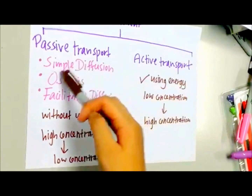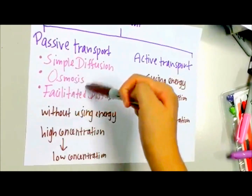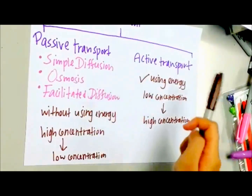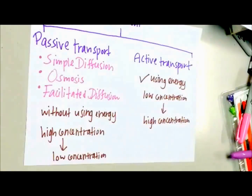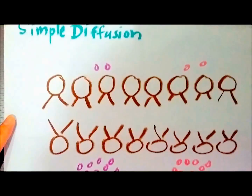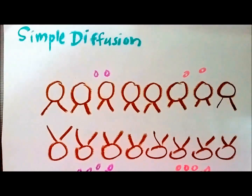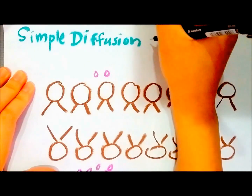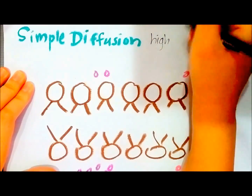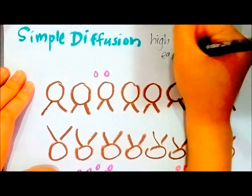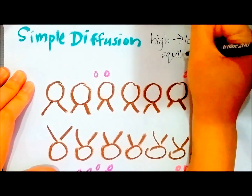Since simple diffusion, osmosis, and facilitated diffusion involve movement of substances without using energy, they are all under passive transport. Simple diffusion means the movement of molecules from a region of high concentration to a region of low concentration until equilibrium is achieved.